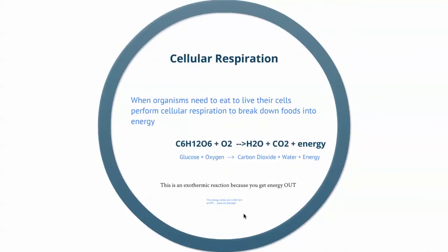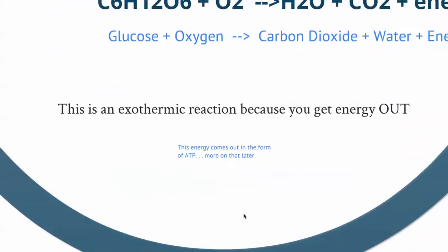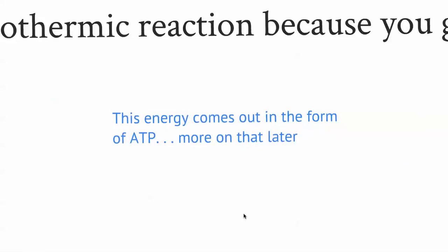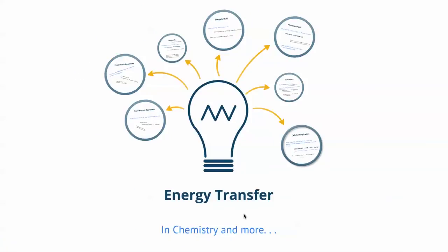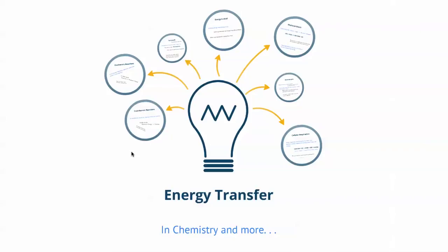So what you need to know is there are two kinds of chemical reactions: endothermic and exothermic. You put energy in or you get energy out. In photosynthesis, you put light energy in. In cellular respiration, you get energy out in the form of ATP. We'll learn more about all this over the next two weeks.